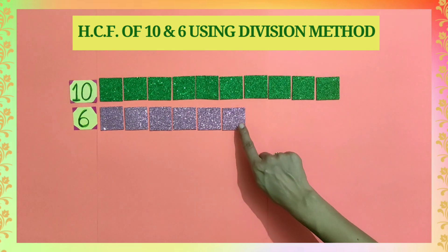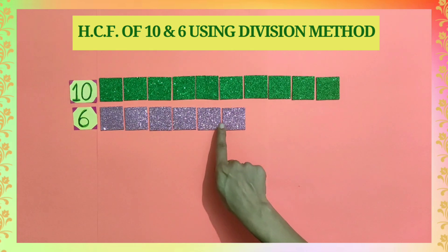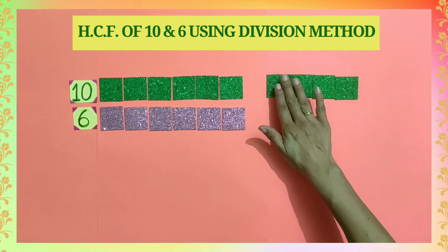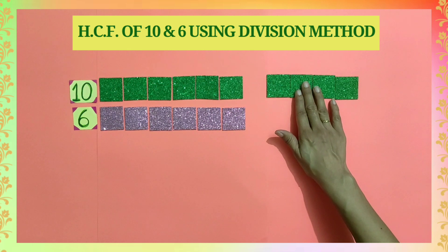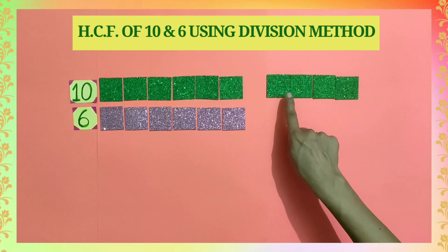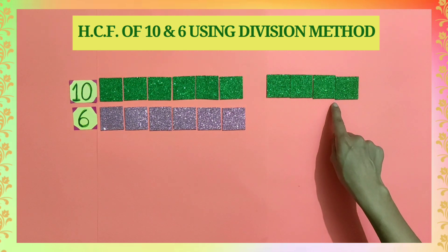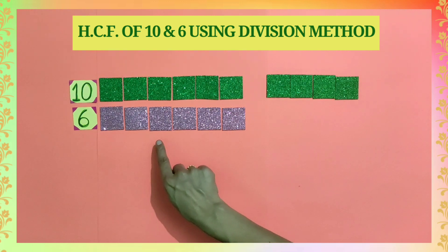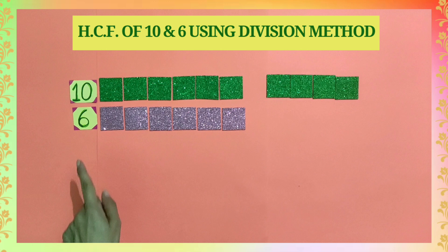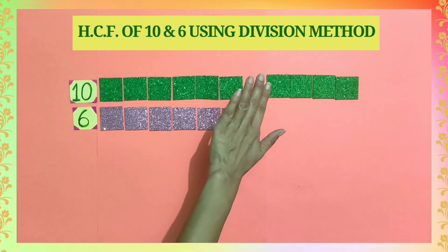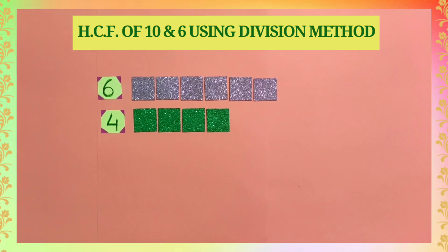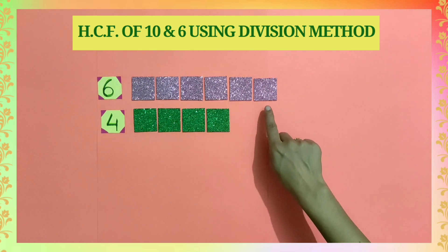Look students, in both the colors 6 and 6 tiles are equal in number but we have 4 extra tiles in green color. To divide the remaining 4 tiles, we will bring them down and remove the tiles which we have already divided. Now here, with 4 we will divide 6 tiles.